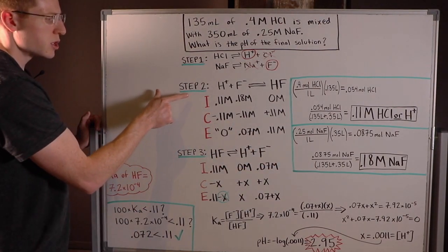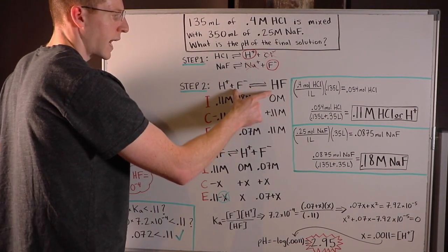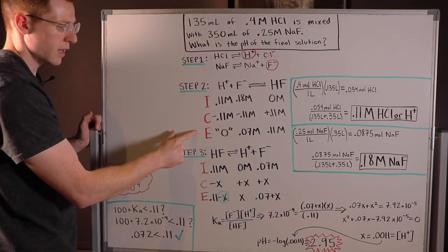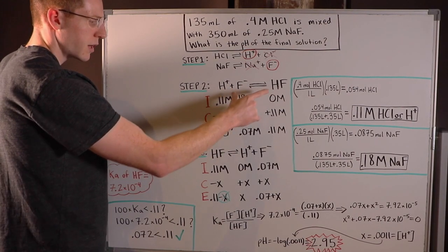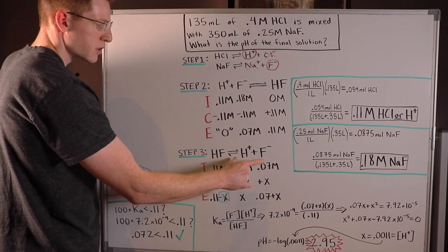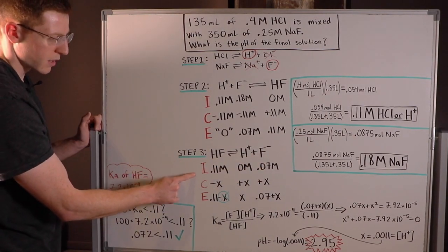So now in step two, you move to step three by reversing the reaction you just made an ICE table for. So now I'm going to reverse H plus plus F minus goes to HF and make it HF goes to H plus plus F minus. So that's my step three. I make another ICE table.